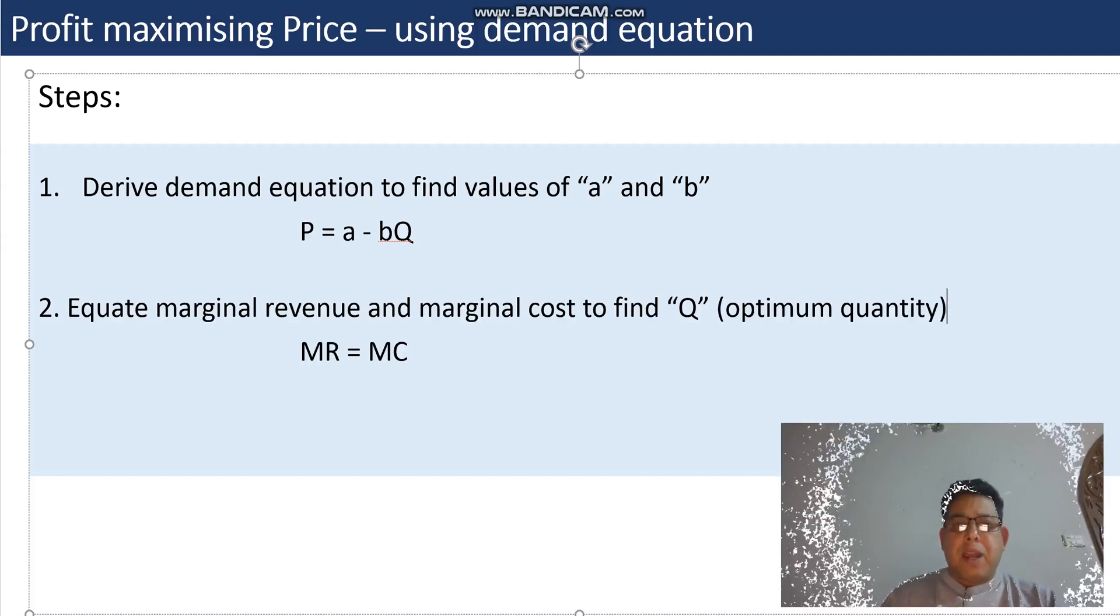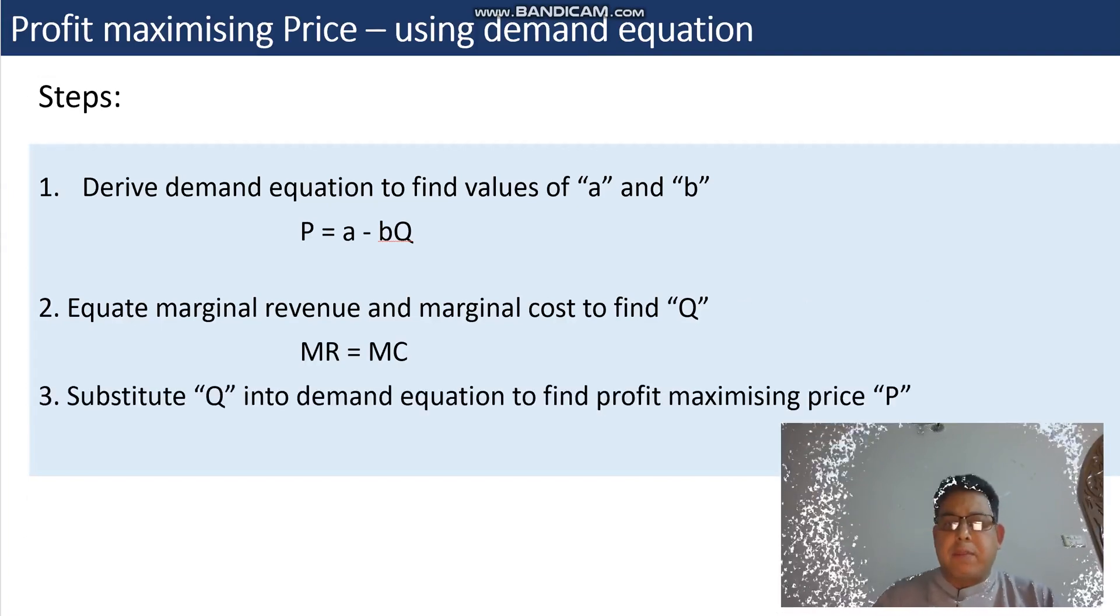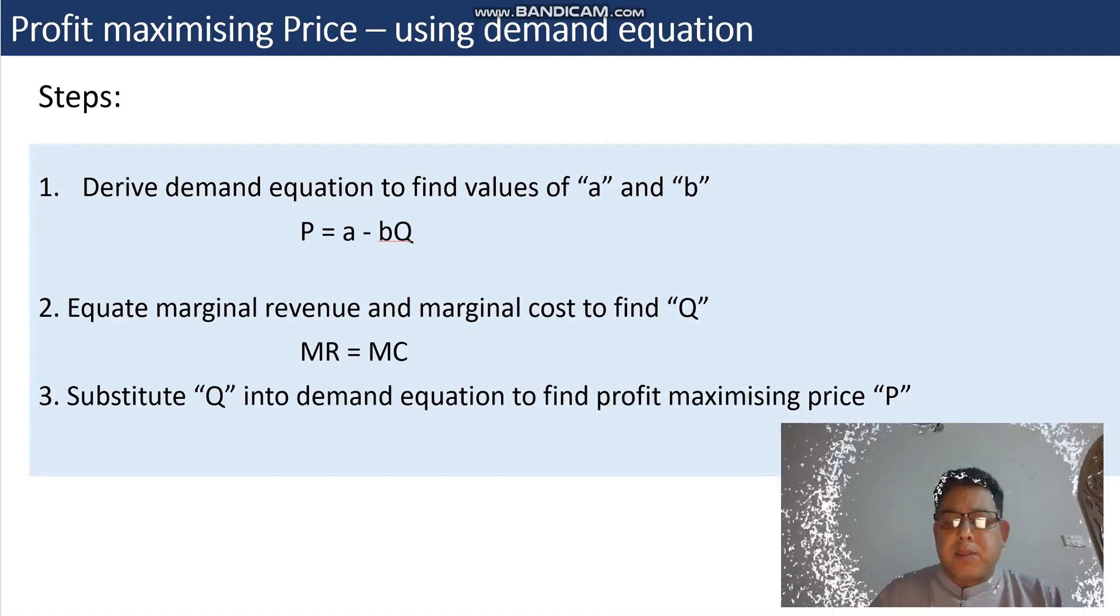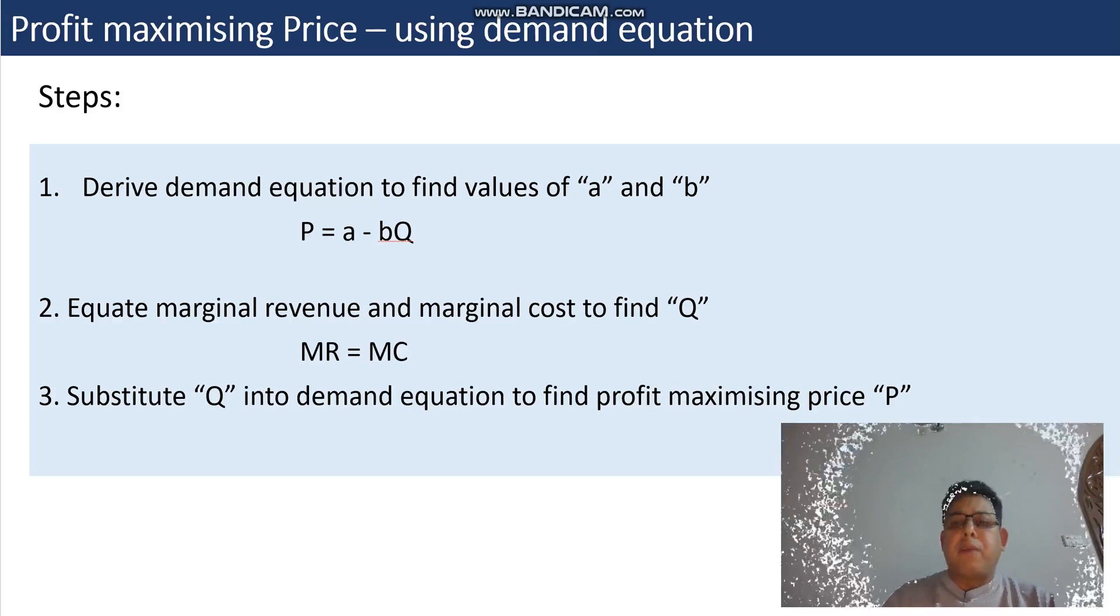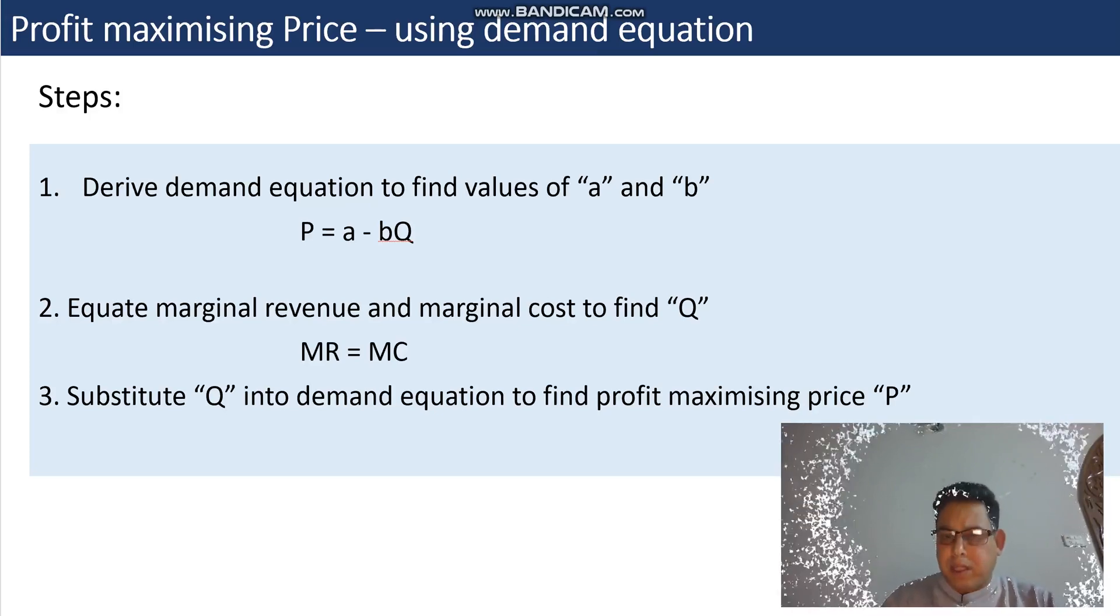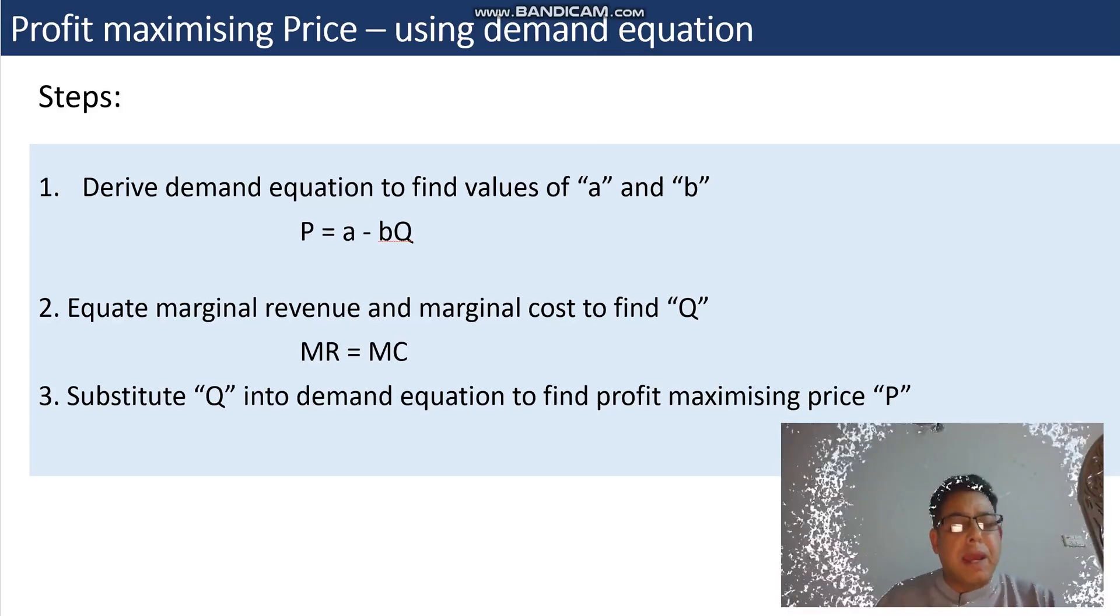Then we will substitute the above Q into the demand equation to find the profit maximizing price. Remember, the demand equation is P = a - bQ.